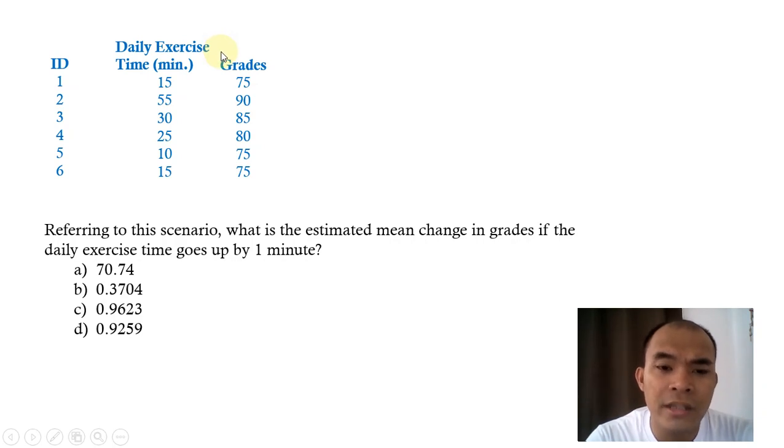The question is, referring to this scenario, what is the estimated change in grades if the daily exercise time goes up by 1 minute? What will happen to this grade if we change this one by 1 minute?